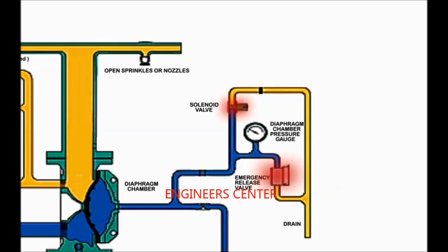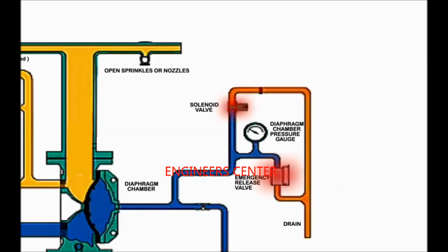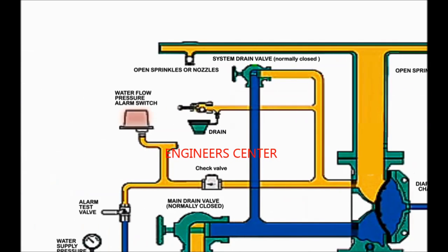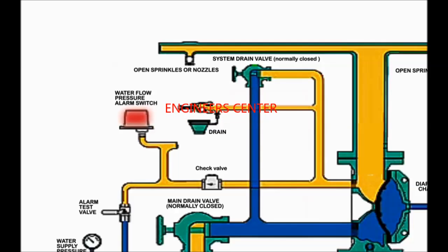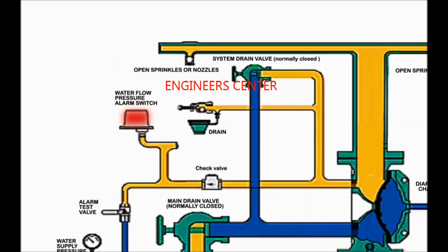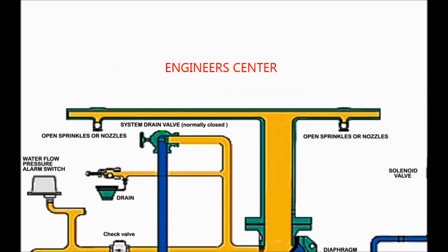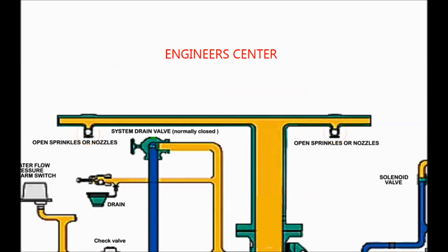Also present on the priming loop is the emergency release valve, which can be operated manually to activate the deluge system. The emergency release valve and the solenoid valve are connected from one end with the priming water pressure and connected to the drain — open to the atmosphere — from the other end. Here is the high pressure switch that is present on the outlet of the deluge valve, which gives an alarm signal in case of sensing supply water pressure. This alarm signal serves as an indication for activating the deluge system and may trigger actions according to the fire and gas system. Here is the outlet of the deluge system that is connected to the sprinklers or nozzles.